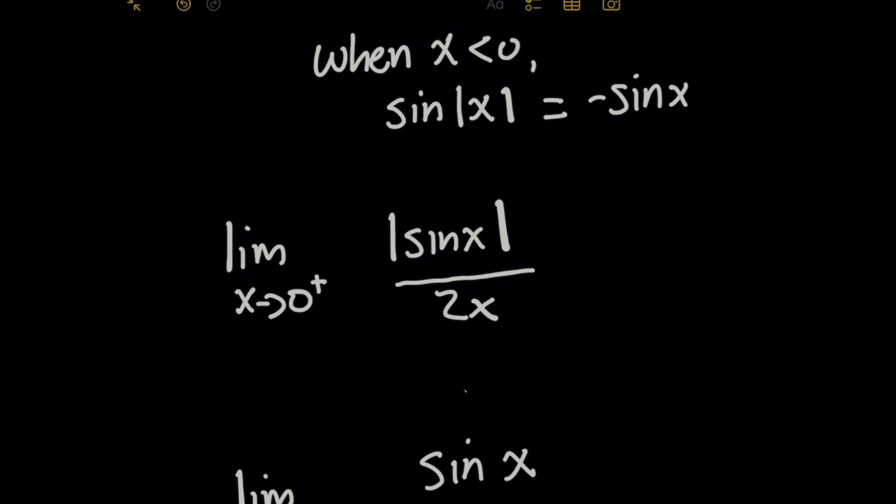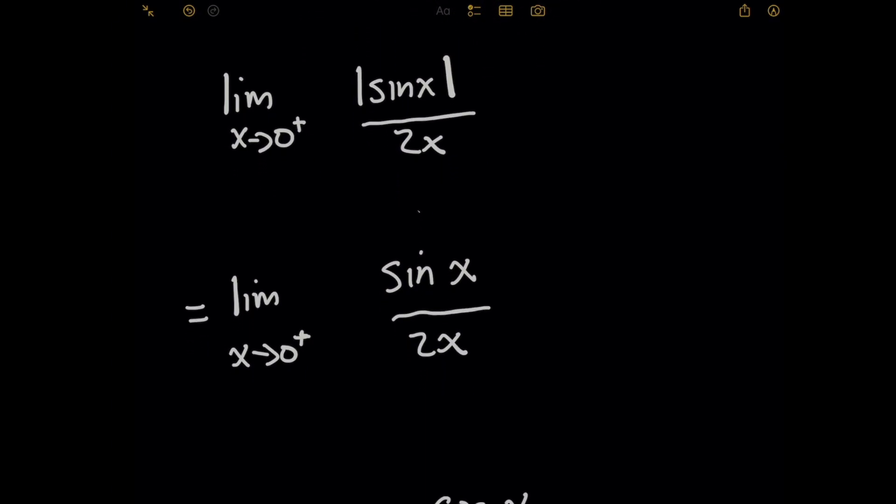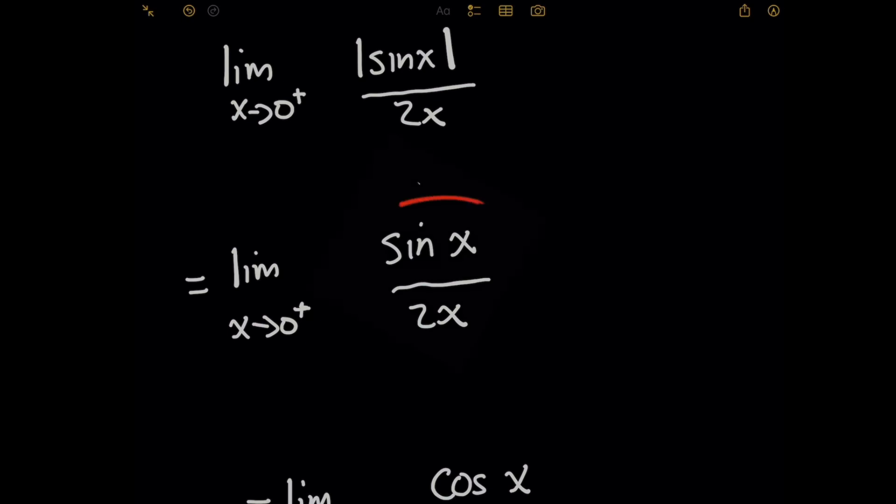So going back to the original limit now, I want to think about two cases. I'm going to approach zero from just the right of the origin, so for very small positive values of x, and then I'm going to repeat it from the other side from the left. So starting with the right where x is like, say, 0.0001, remember that the absolute value of sine of x all over 2x can be rewritten as we showed above, where you can just drop the absolute value altogether.